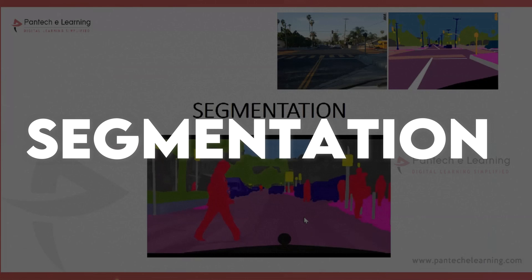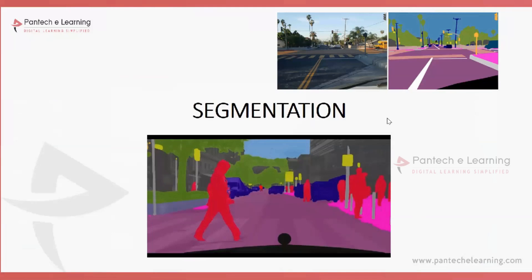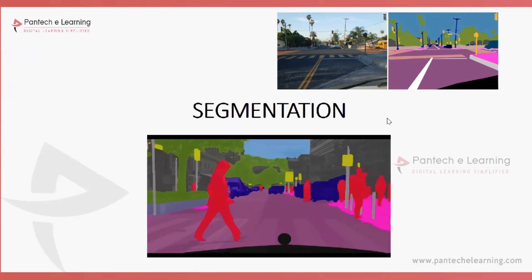Today we will see about segmentation. Segmentation is one of the most important processes in image processing. We work on it for multiple types of functions, especially object detection, object classification, face recognition, multiple object detection, traffic sign recognition, vehicle detection, tumor recognition, or tumor area calculation.